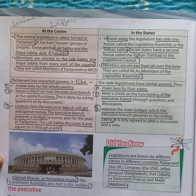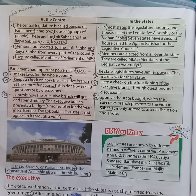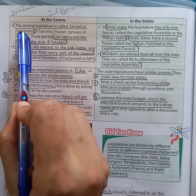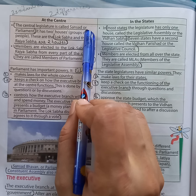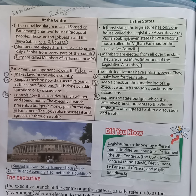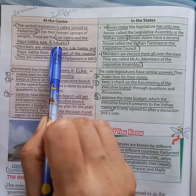Next question: what is the central legislature called? Answer: the central legislature is called Sansad or the Parliament. Next question: how many houses are there in the Parliament or Sansad? Answer: there are two houses in the Parliament or Sansad, named the Lok Sabha and the Rajya Sabha.